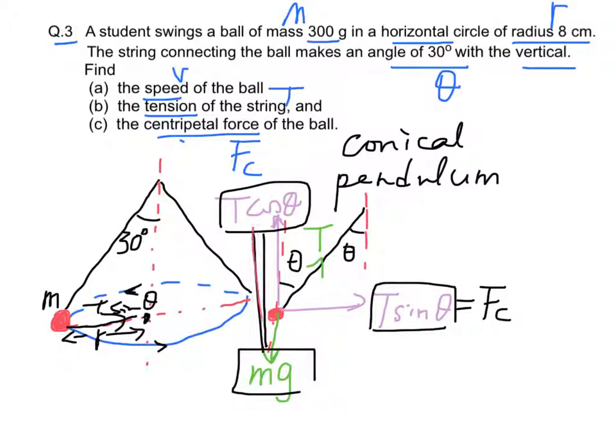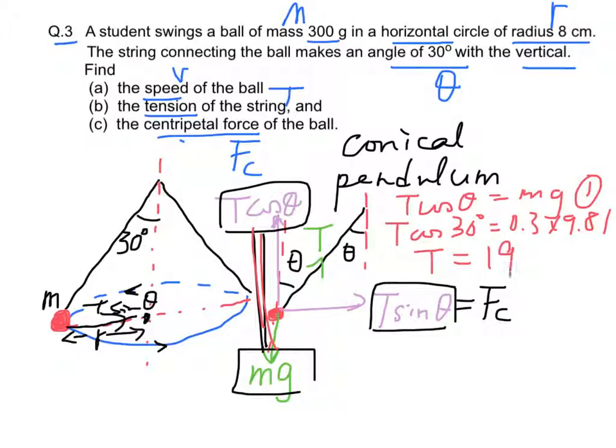Since T cos θ is equal to weight, we have T cos 30 degrees equal to the mass 0.3 kg times g which is 9.81. Therefore, we can find tension first: 19 N.